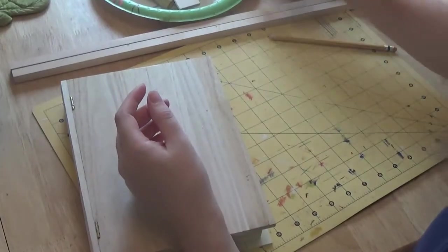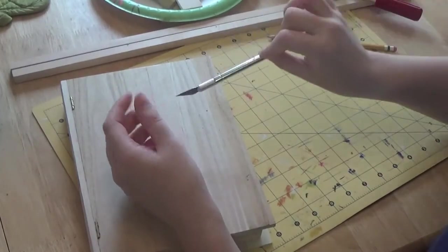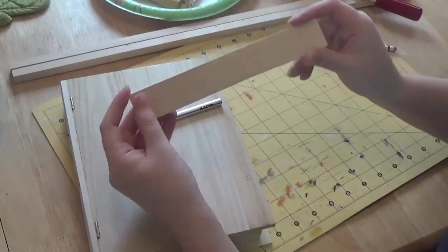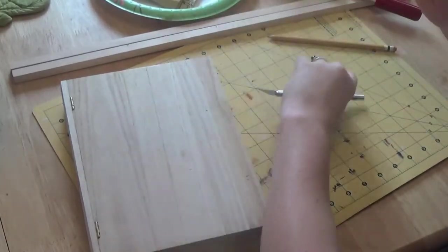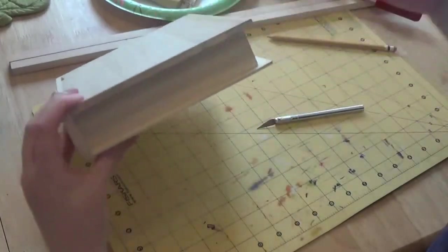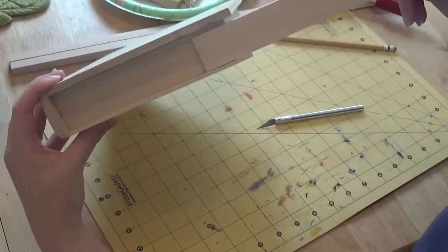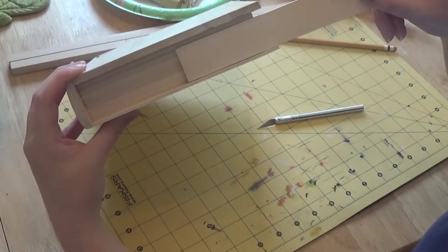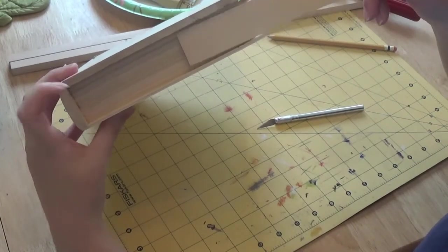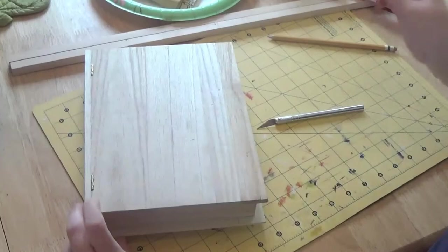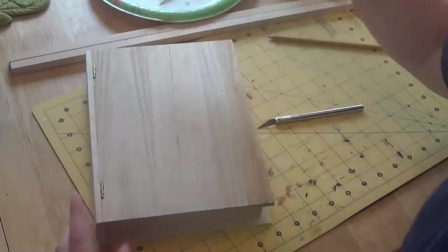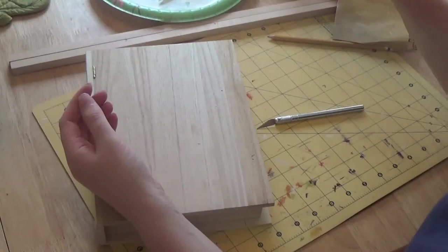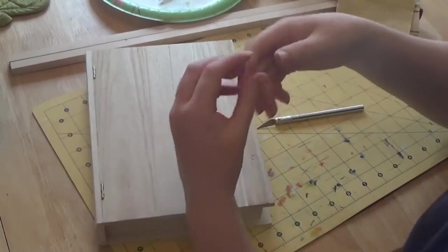An X-Acto blade, some scrap wood that is about the same height as the inside of the wooden book. Just a little bit less than the height of the inside of the book. We're going to use this as a divider. You're also going to need sandpaper, and I use a paintbrush to apply the wood glue for less mess.